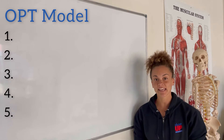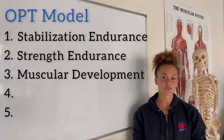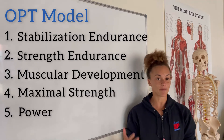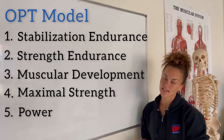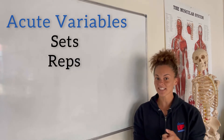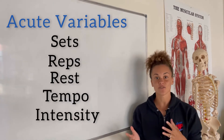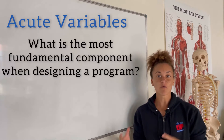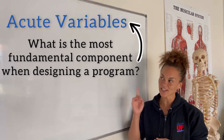There are going to be five phases: Phase 1, stabilization. Phase 2, strength endurance. Phase 3, muscular development. Phase 4, maximal strength. And phase 5, power. Within those phases, there are going to be different acute variables — sets, reps, rest, tempo, and intensity. Just in case you are taking that NASM CPT, a question you may see is: what is the most fundamental component when designing a program? And that's going to be your acute variables.